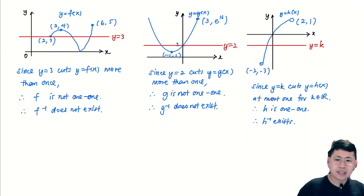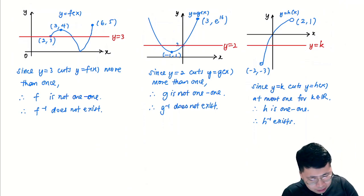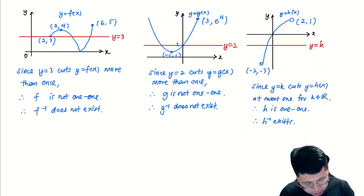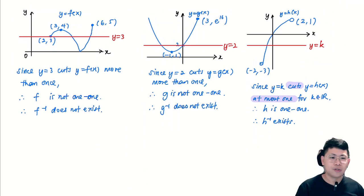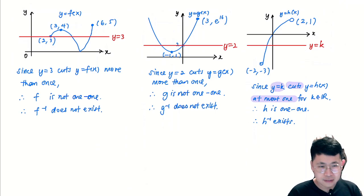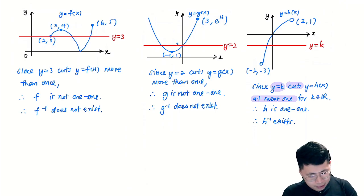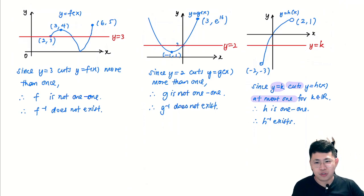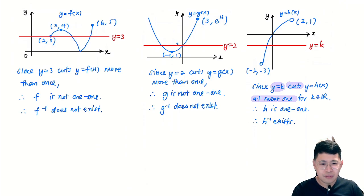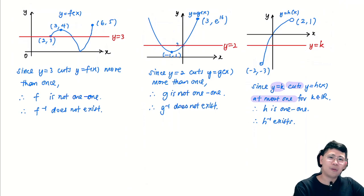So to summarize: for f and g, we found a specific horizontal line that cuts more than once — showing they are not one-to-one. For h, we used a generic y equals k to show it cuts at most once for all real k, confirming h is one-to-one. That's the key difference in phrasing between a one-to-one function and a non-one-to-one function. We'll see you in the next video for the next concept.